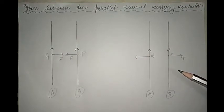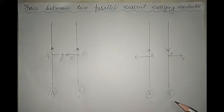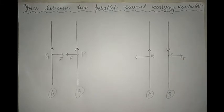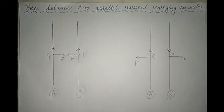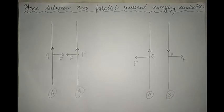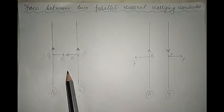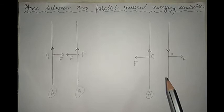Now using Fleming's left-hand rule in the second case — two parallel wires A and B carrying current in opposite directions — you will see that these two wires experience a force in opposite directions, that is, they repel each other. So remember: two parallel wires carrying current in the same direction attract each other, whereas two parallel wires carrying current in opposite directions repel each other.